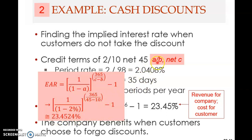Note this: the period rate is only 2%, which looks rather small. But this is 2% for 35 days — slightly more than one month, about 2.04%. If you compound this slightly less than 12 times in a year, you get 23.45%. That is the EAR, and this is quite high.